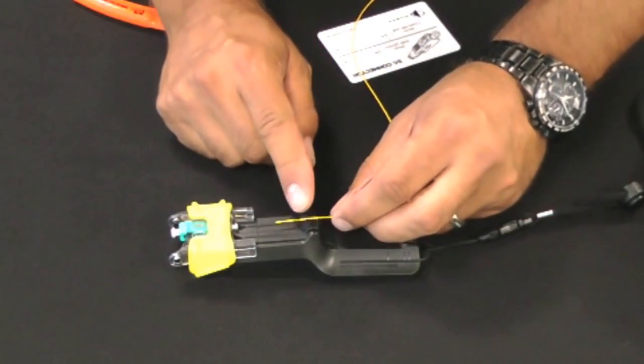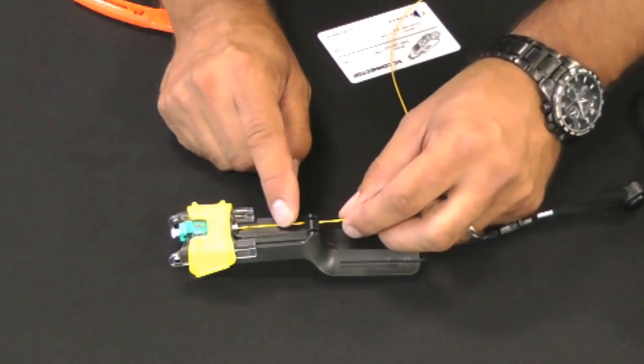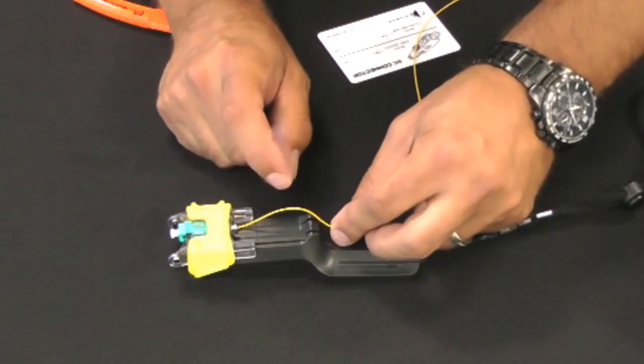Place the cleaved fiber into the SC guide slot in the Lightbow termination tool. Please note that both SC and LC positions are located in the tool. Gently slide the fiber forward into the back of the connector.